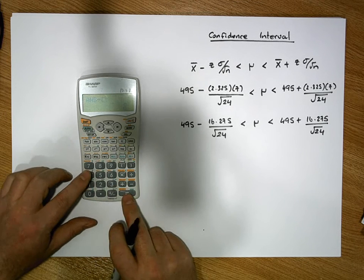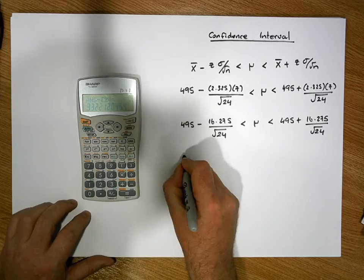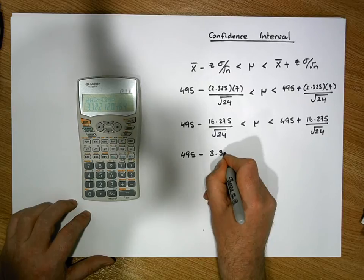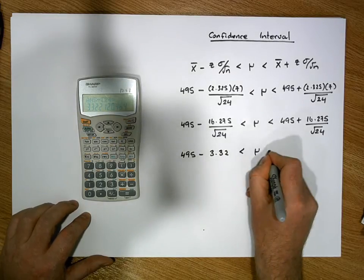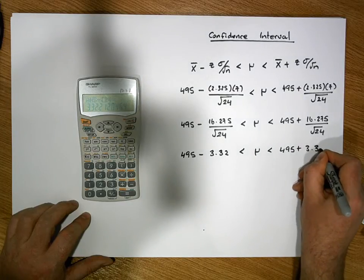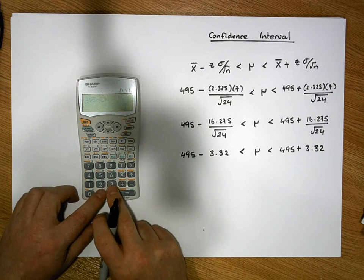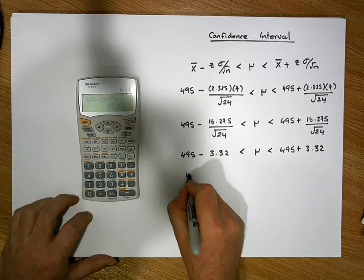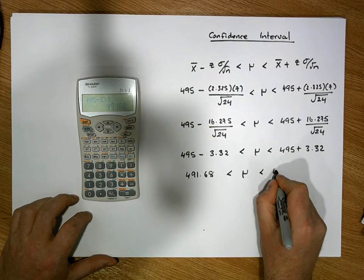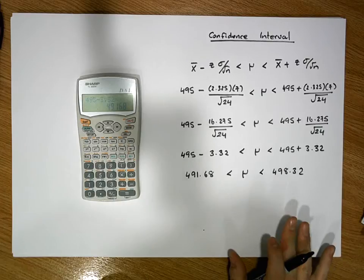Dividing 16.275 by the square root of 24 gives us a value of approximately 3.322 — let's say 3.32 to two decimal places. So this becomes 495 minus 3.32 must be less than mu, which must be less than 495 plus 3.32.